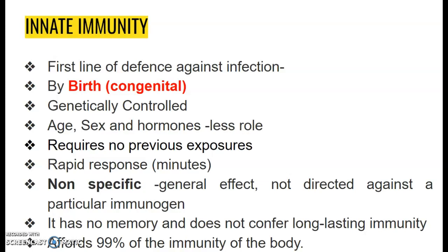The first part is innate immunity. What is innate immunity? It is simply the first line of defense against any type of infections. This is obtained by the virtue of birth, so it can be called congenital immunity.